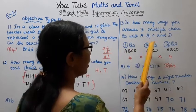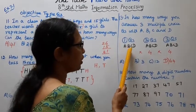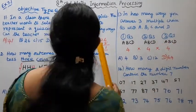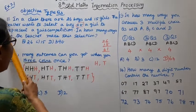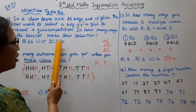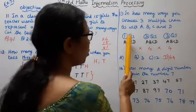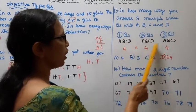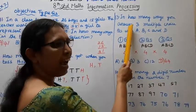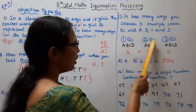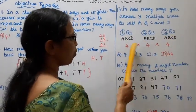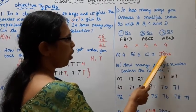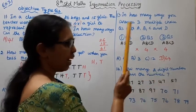For the first question, you can choose A, B, C, or D — that's 4 choices. Similarly for the second question and the third question, each has 4 choices. So the total number of ways is 4 × 4 × 4 = 64. The answer is option D, 64.